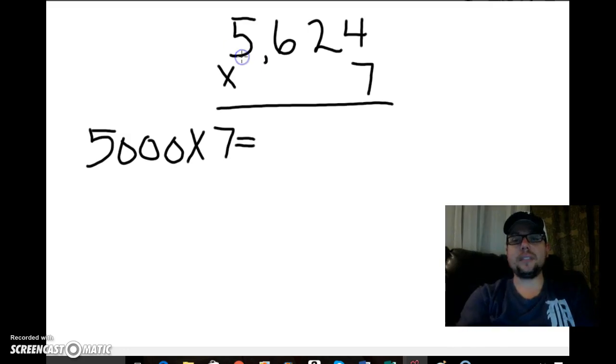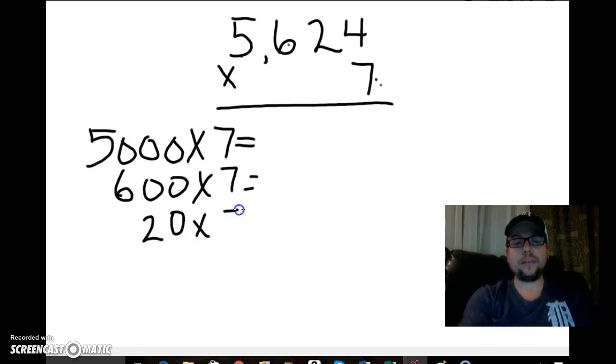I'm doing 5,000 times the 7. Now I'm going to do 600 times the 7. Then I have 20 times 7. And finally I have 4 times 7.